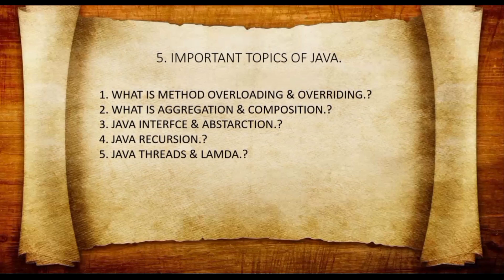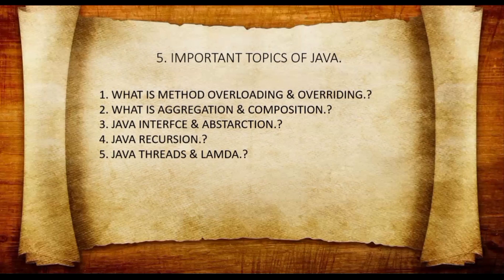What is interfacing and abstraction — what is an interface, what is abstraction, what is an abstract class, abstract variables, abstract methods — you have to come across every single one of these. Also Java recursion: a program within a program is called recursion, so know the basic details about how recursion works in Java. Last comes Java threads and Lambda — and these cover all the important core Java topics.